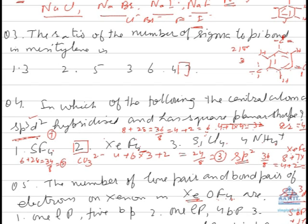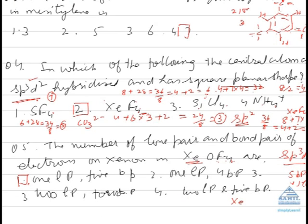So the correct choice is five bond pairs, one lone pair, the first choice. Supposing the question is of XeO4.